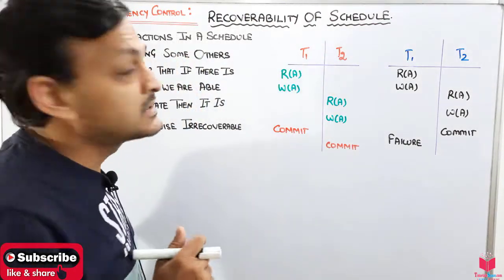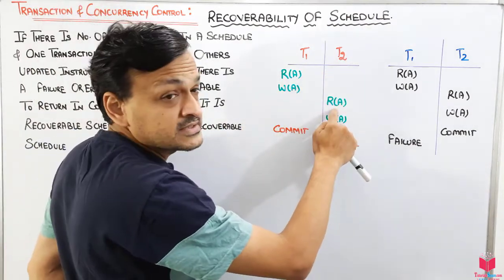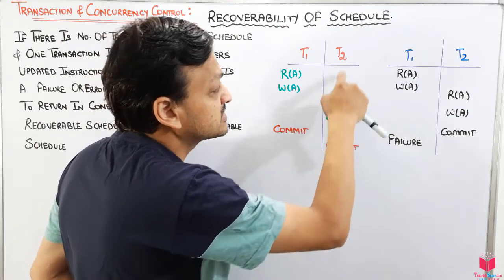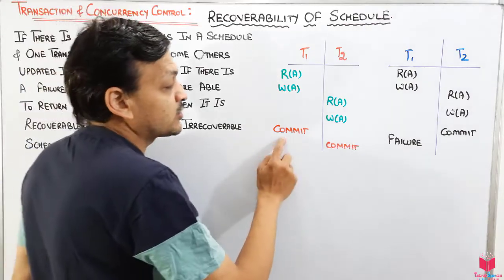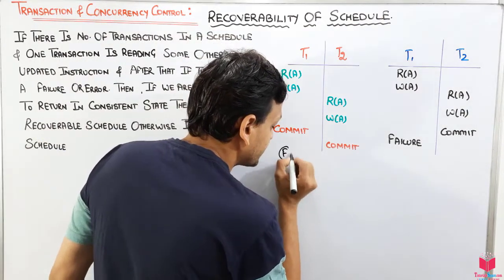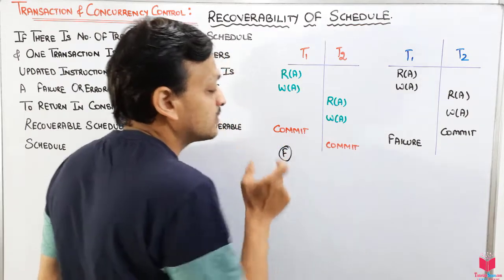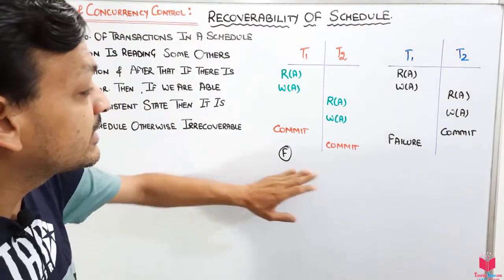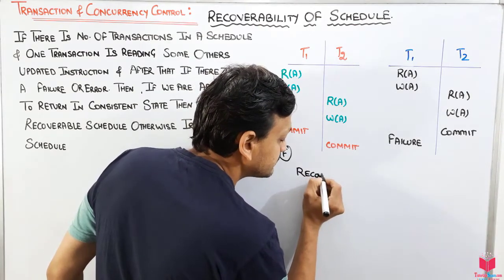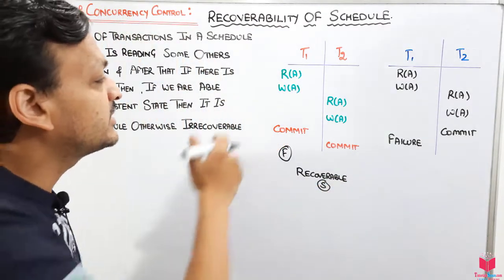This schedule contains two transactions: a read operation then a write operation. Transaction T2 reads a value that was updated by T1 — that means the updated value is transferred to this transaction. After that, suppose T1 commits and T2 commits as well. If there is a failure, will it roll back? No, because both have already committed their transactions. That's why it will keep a consistent state — no data will be lost.